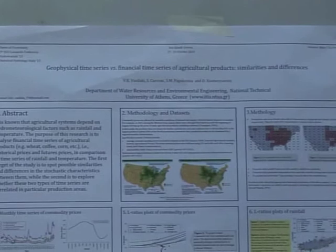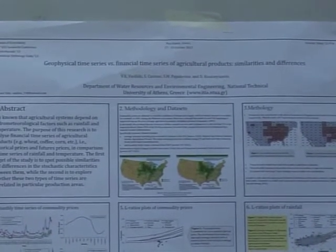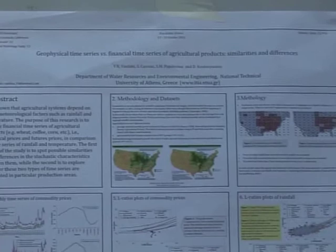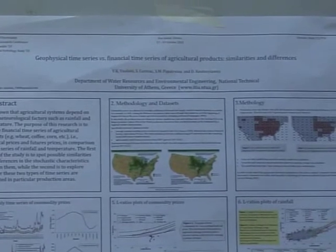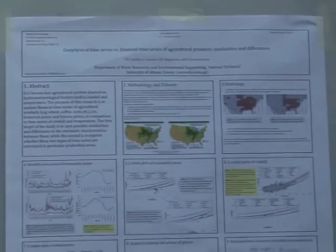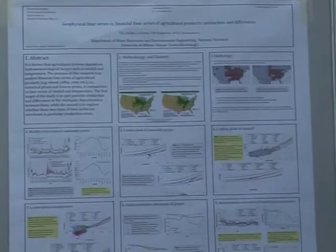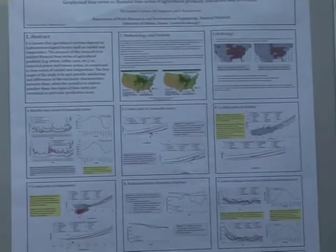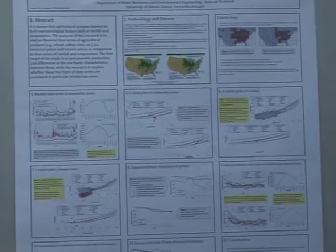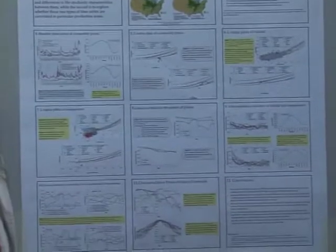We chose prices of soybeans and corn received by producers in the USA, because the USA is the largest producer of this commodity, and future contracts received from the Chicago Board of Trade.